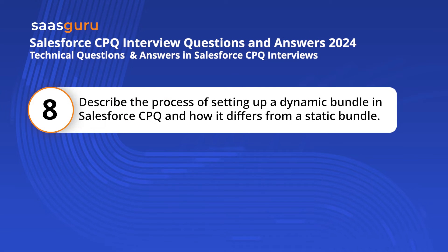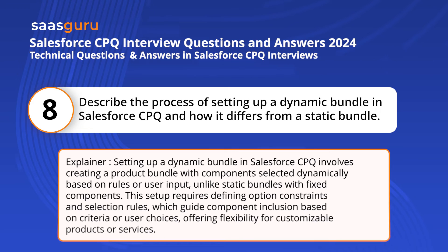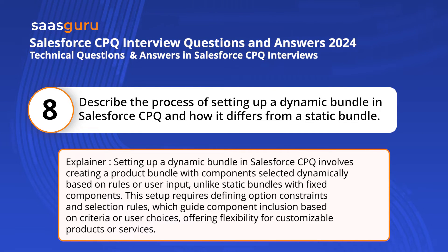Question 8. Describe the process of setting up a dynamic bundle in Salesforce CPQ and how it differs from a static bundle. Setting up a dynamic bundle in Salesforce CPQ involves creating a product bundle with components selected dynamically based on rules or user input, unlike static bundles with fixed components. This setup requires defining option constraints and selection rules, which guide component inclusion based on criteria or user choices, offering flexibility for customizable products or services.